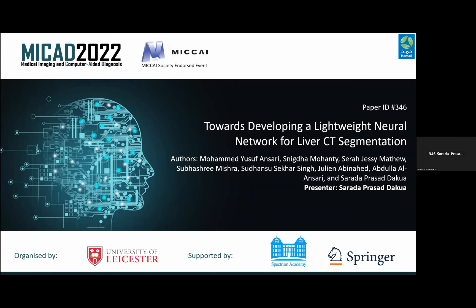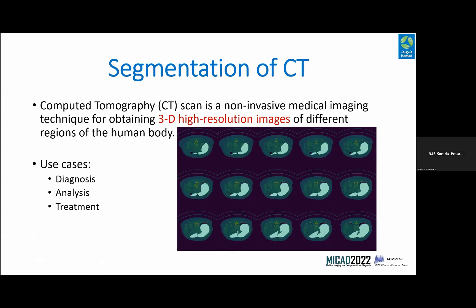Today I'll be presenting our work titled 'Towards Developing a Lightweight Neural Network for Liver CT Segmentation.' Let's start by understanding what CT images are and what role they play in the medical domain, especially in radiology. CT images, also known as computed tomography, are a non-invasive way to obtain high-resolution 3D images of cross-sections of the human body. The most applied use case is in the visceral region, also known as the abdominal region, to capture how the abdominal organs of the human body look. They can be used for disease diagnosis, analysis of organ shapes, and treatment planning.